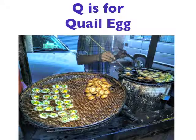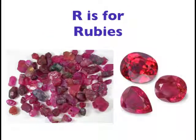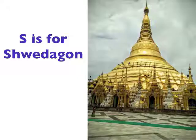Q is for quail eggs. R is for Rubies. S is for Shvergan, Myanmar's important pagoda.